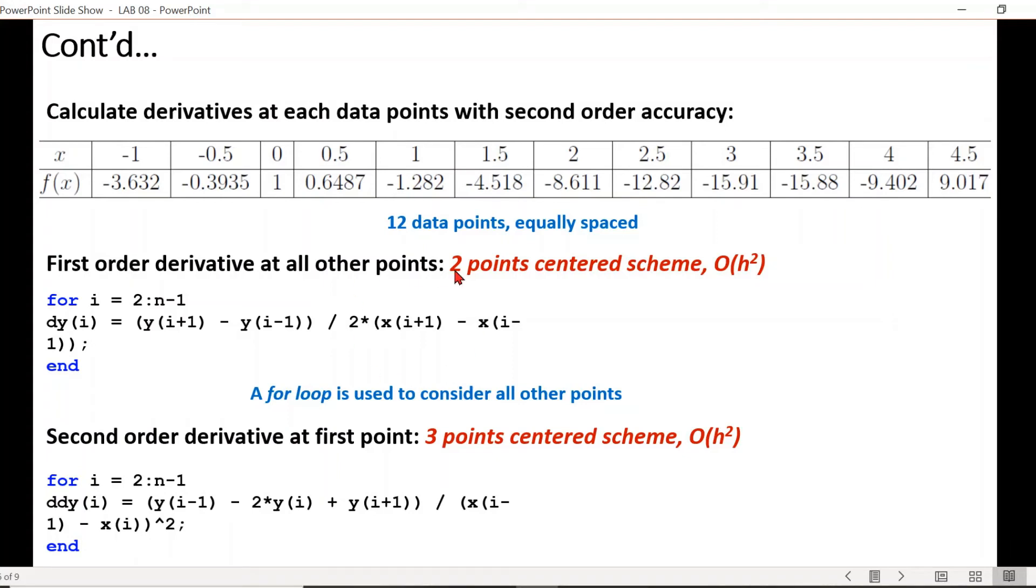For example, we should begin the loop from second data point that will end at the second last data point, which is n minus 1. You can see that for these points we do not need forward or backward methods to ensure second-order accuracy. Instead we use two points center method for the first derivative and three points center method for the second derivative.